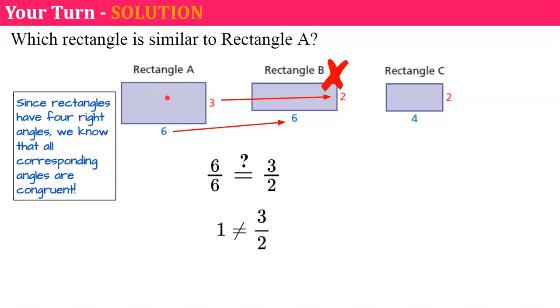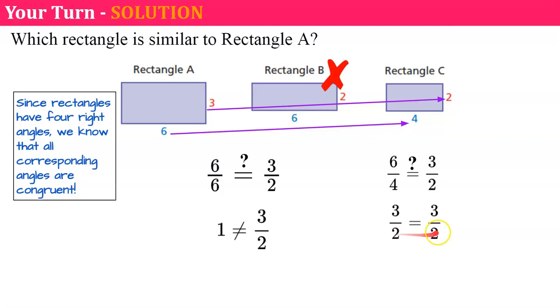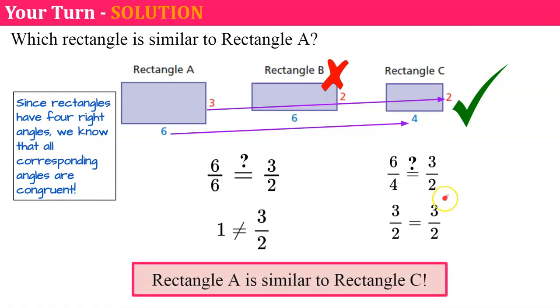Although that only leaves rectangle C to be the similar rectangle, we still need to be able to prove and explain and defend our answer. We need to think about the corresponding sides. Six corresponds to the side that has a measure of 4 on rectangle C, and the side that's 3 in A corresponds to the side that measures 2 in rectangle C. My corresponding sides, do they form a proportion? 6 to 4, is it equal to 3 over 2? Using cross product property, 12 and 4 times 3 is 12, and 12 equals 12, it checks. Rectangle A is similar to rectangle C because the corresponding sides are proportional and the corresponding angles are congruent.